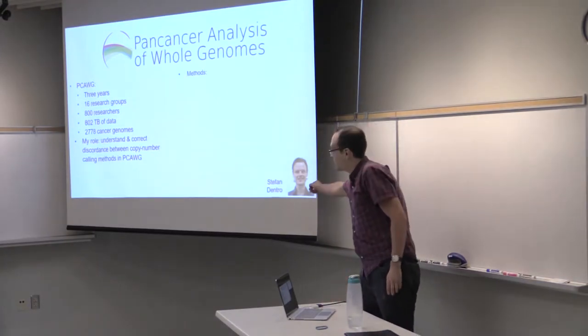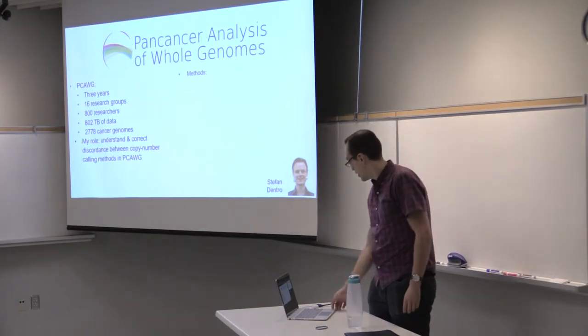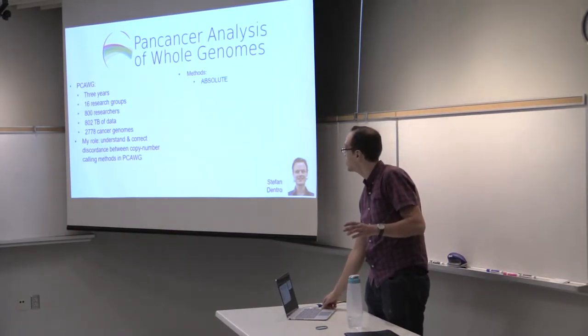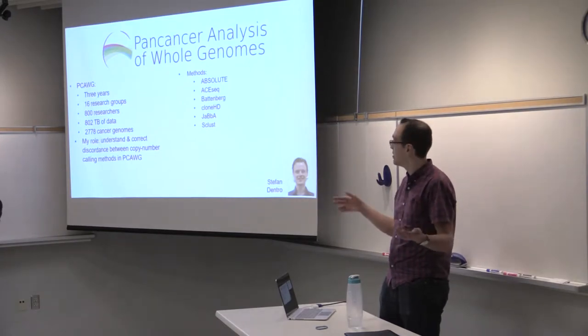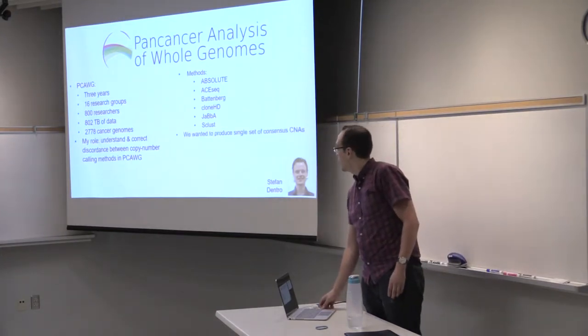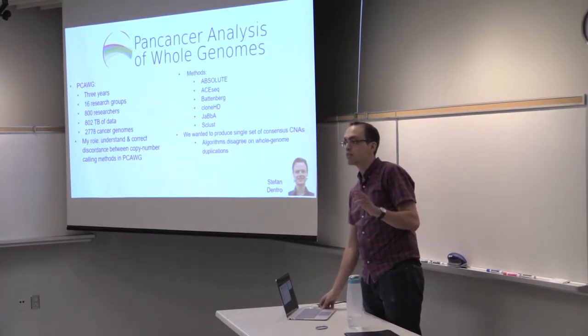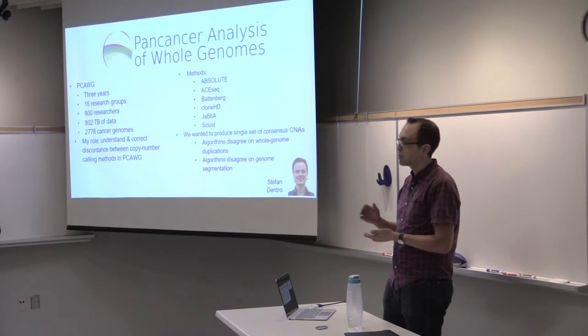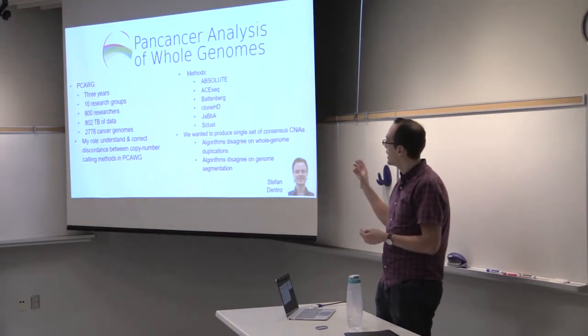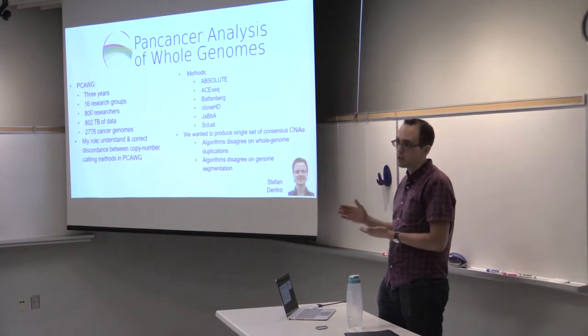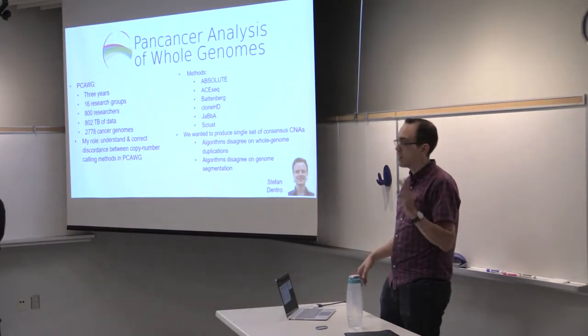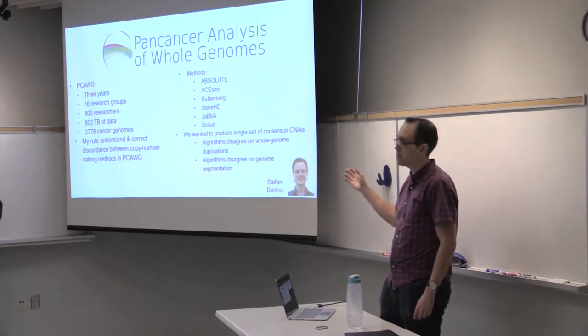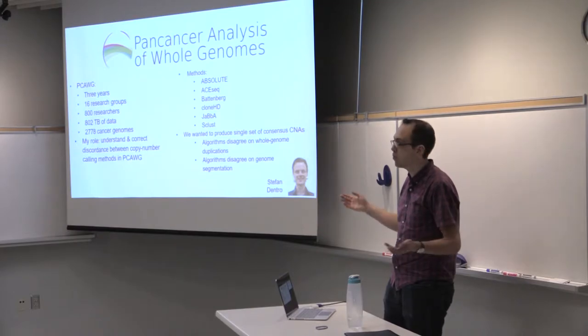This is work that I've undertaken with Stephen Dentro at the Francis Crick in the UK. We've been working to look at these six different methods: Absolute, ASCAT, Battenberg, JABBA, and SClust, different algorithms that have different ways of calling copy number aberrations. Our goal is to produce a single set of consensus CNAs, but this was difficult for two reasons. First, because algorithms disagree on whole genome duplications, and second, they disagree on general segmentation. PCAWG is very nearly at a close. Out of our working group of about 25 people working on evolution and heterogeneity, we have two main papers coming out. The evolution paper is already up on bioRxiv, and the heterogeneity paper will be coming out hopefully in the next two to three weeks.